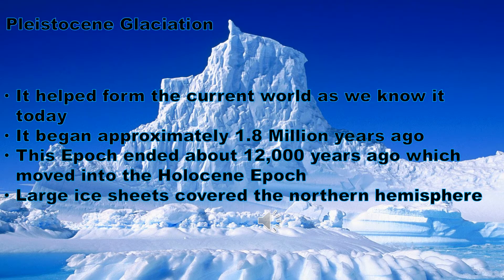One of the ice ages is Pleistocene glaciation. It helped form the current world as we know it today. It has helped form our mountains, rivers, lakes, ravines, oceans, erosions of land, depositions of material, animals, plant life, sea levels, and our climate including ocean temperatures. It began approximately 1.8 million years ago.